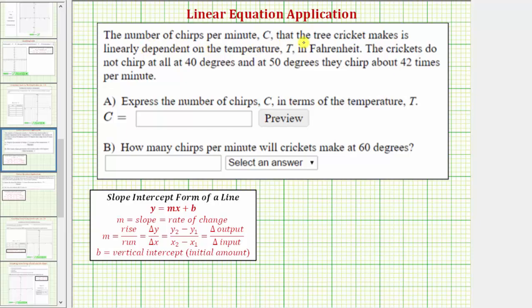The number of chirps per minute C that the tree cricket makes is linearly dependent on the temperature T in Fahrenheit. The crickets do not chirp at all at 40 degrees, and at 50 degrees they chirp about 42 times per minute.